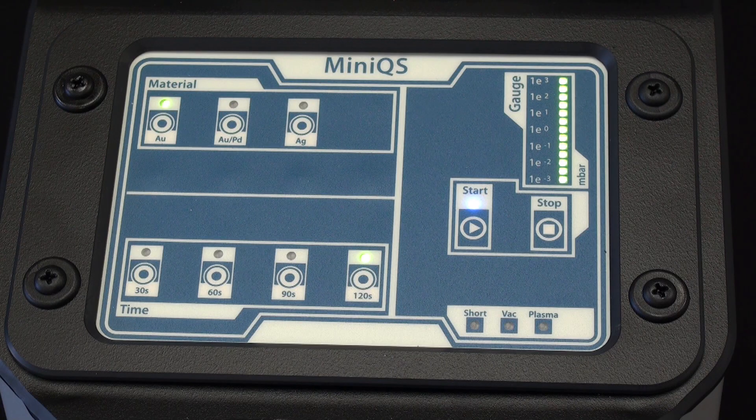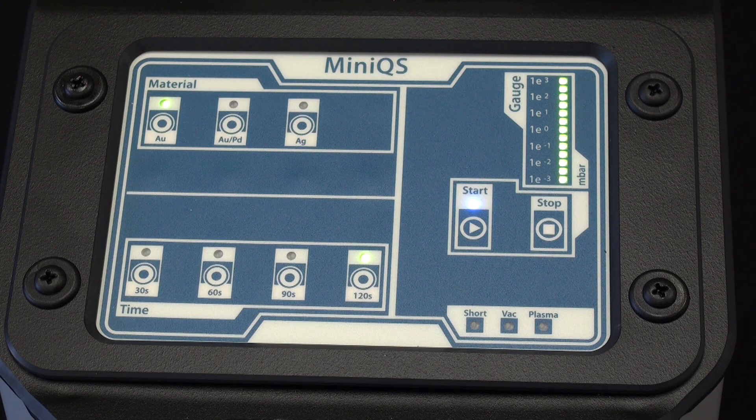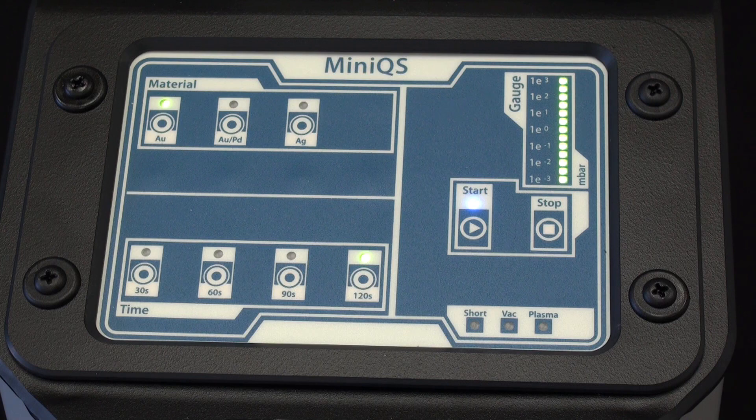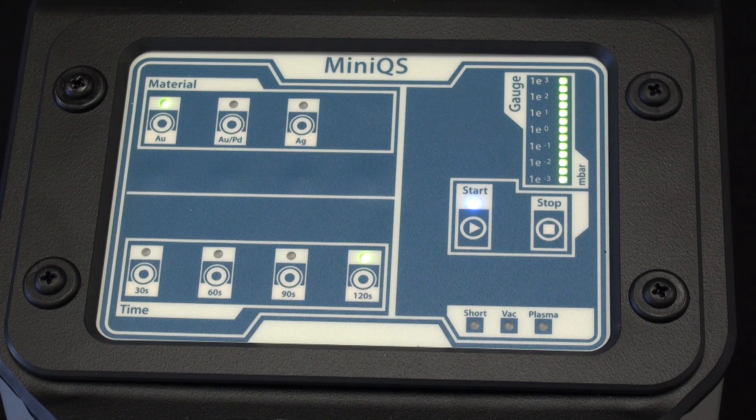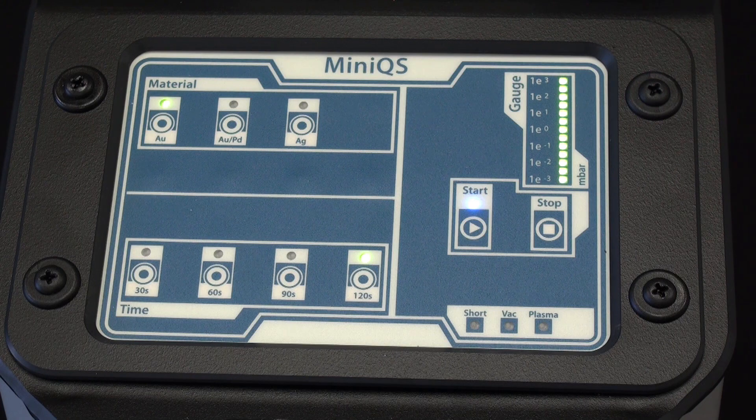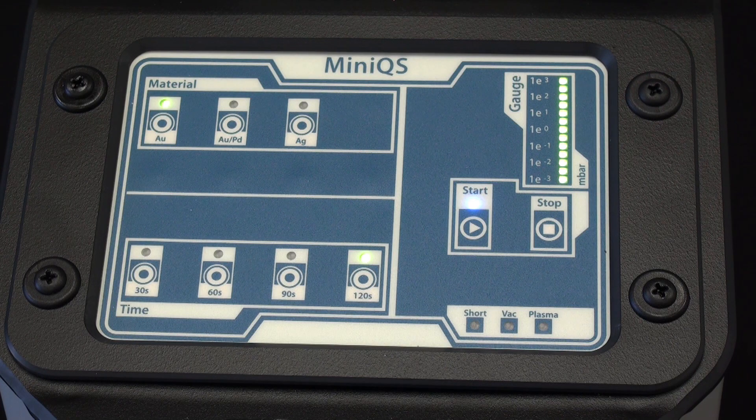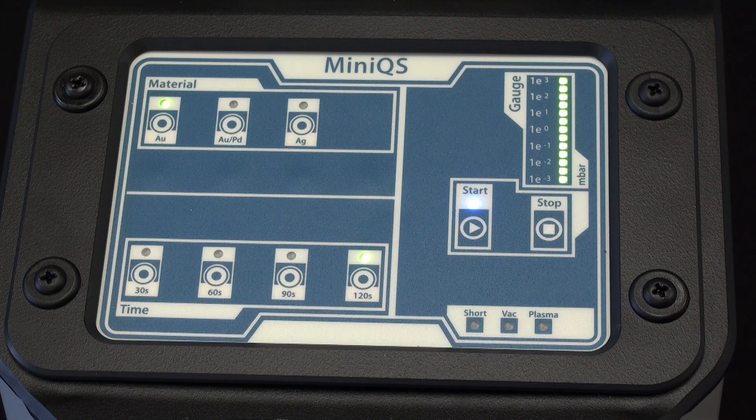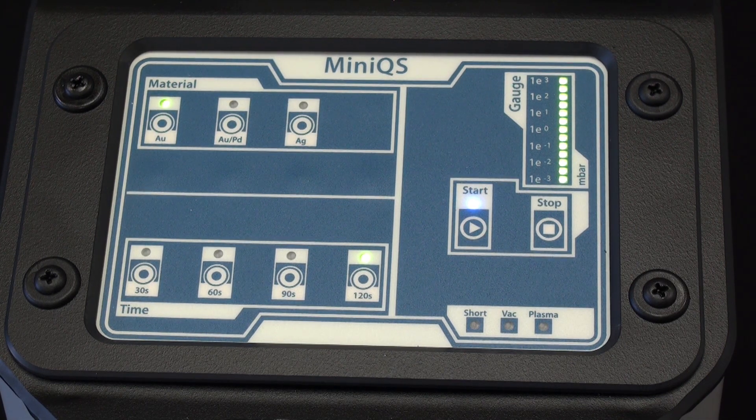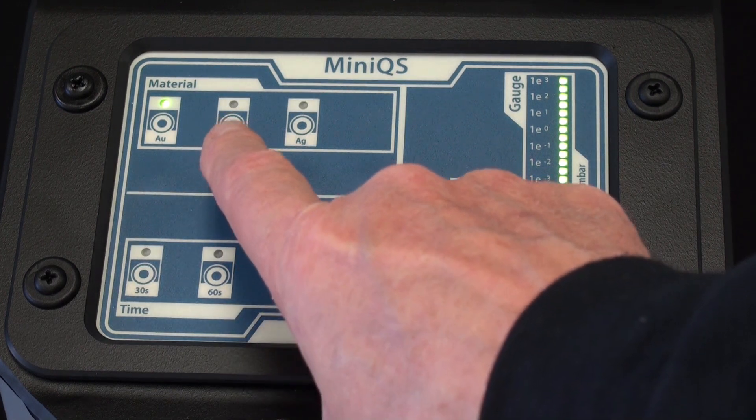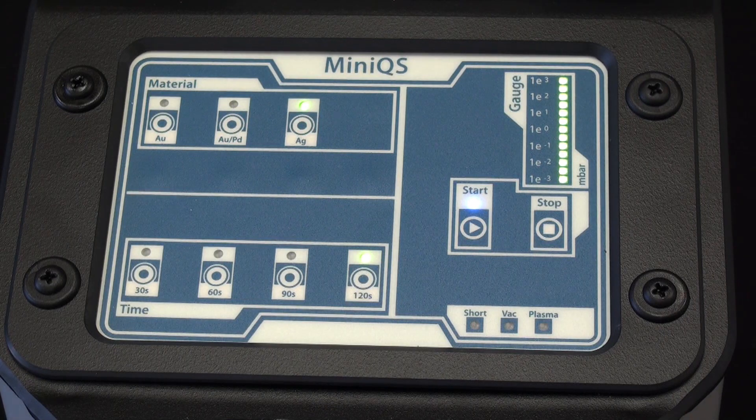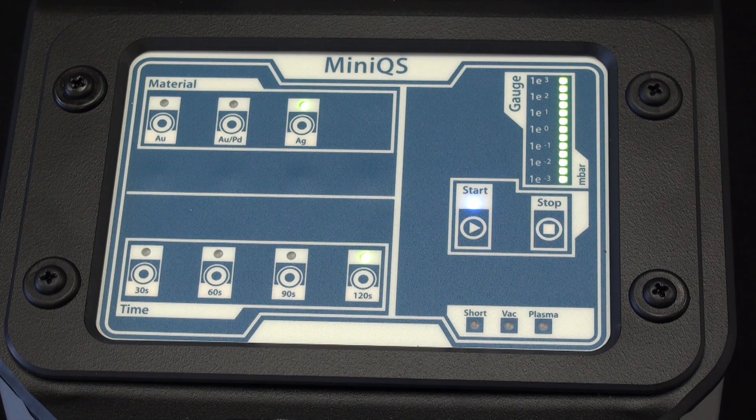The MiniQS is an entry-level sputter coater meant to produce coatings of three materials: gold, gold palladium, and silver. The material that's installed in the sputter head needs to be changed if you switch materials, but as far as the instrument goes, it's as simple as pressing a button to select the material that you wish to sputter.